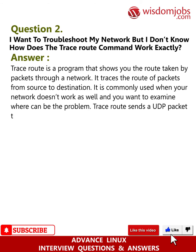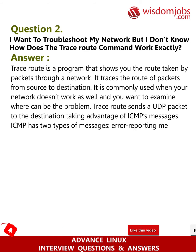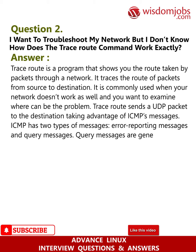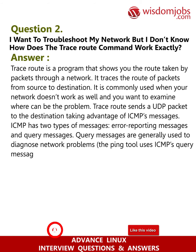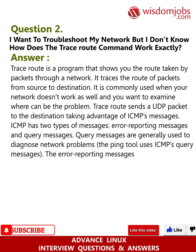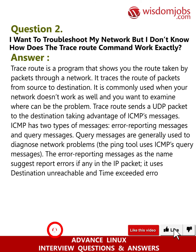Traceroute sends a UDP packet to the destination taking advantage of ICMP messages. ICMP has two types of messages: error reporting messages and query messages. Query messages are generally used to diagnose network problems. The error reporting messages report errors, if any, in the IP packet. It uses destination unreachable and time exceeded error messages.